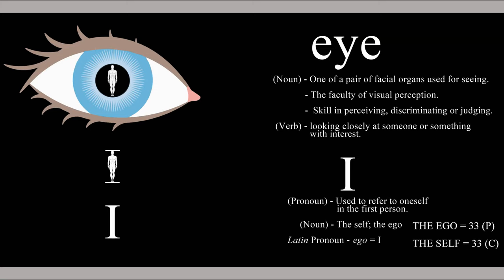'False ego' implies distortion, corruption, evil. 'Ego' implies definition, honesty, good — ego for the positive connotation, false ego for the negative connotation. The self, the ego, and 'I' are all synonymous. All of these terms have an original, positive moral context.